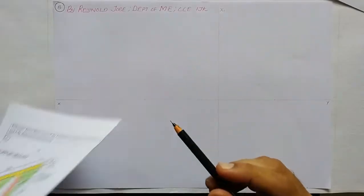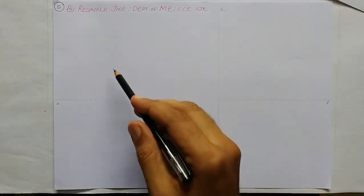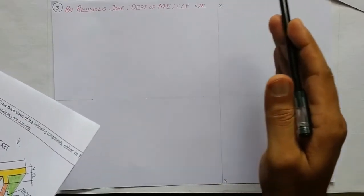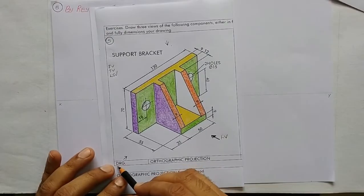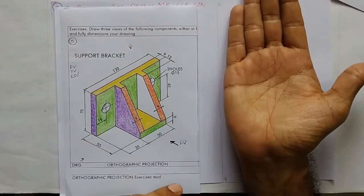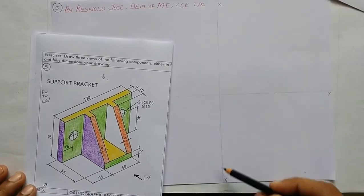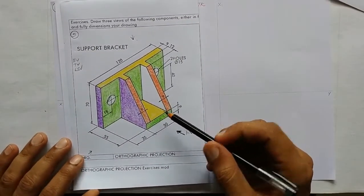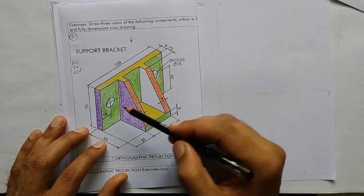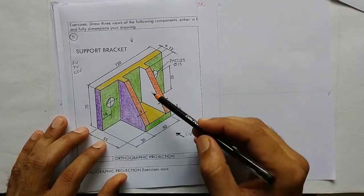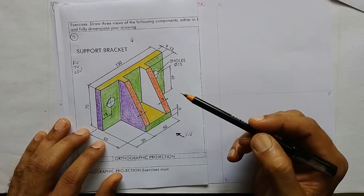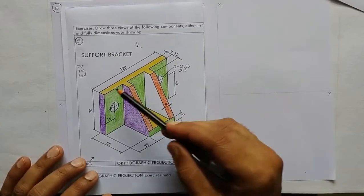First we shall draw the front view. I have drawn the XY line and X1Y1 line — the front view goes here, the top view here, and the side view here. I am drawing the side view on the right hand side because we are having a left side view, observed from the left, projected onto a plane and then tilted to this side. That is why I drew the X1Y1 line to this side. Six surfaces will be visible in the front view.